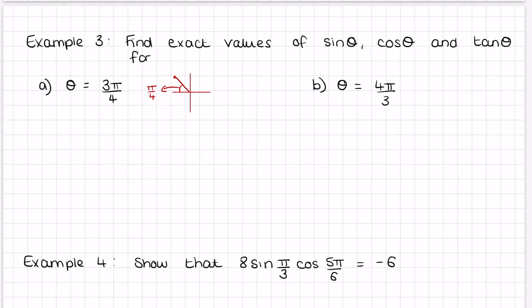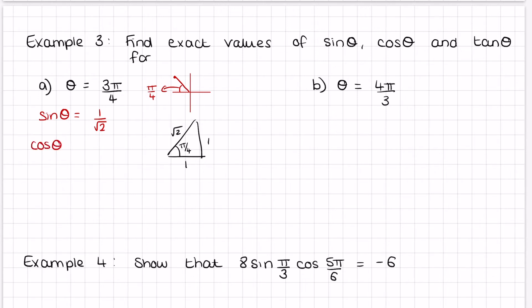Using the exact value triangle for π/4 (45 degrees), the sides are 1, 1, √2. Sin θ = 1/√2 (opposite over hypotenuse). We must think about quadrants: sine is positive in quadrants 1 and 2, so this answer is positive. Cos θ is also 1/√2 (adjacent over hypotenuse), but in the second quadrant cos is negative, because cos is our x-coordinate and x is negative in quadrant 2.